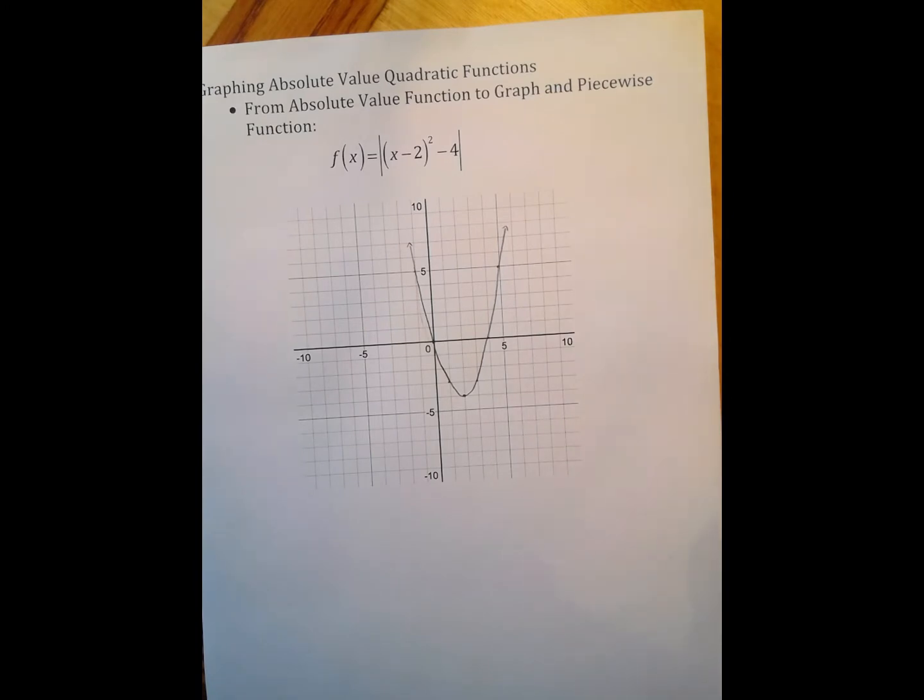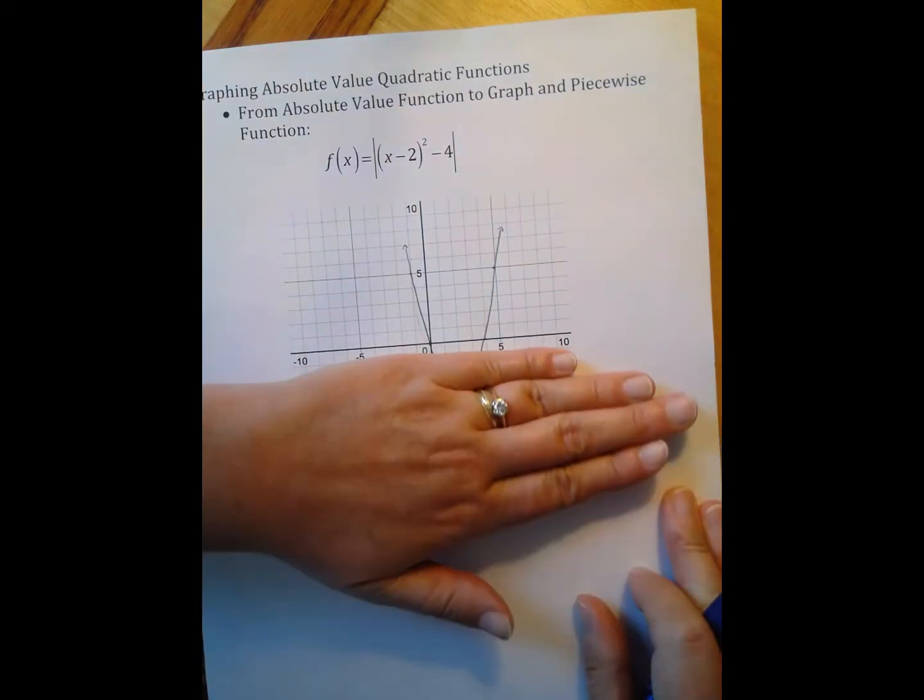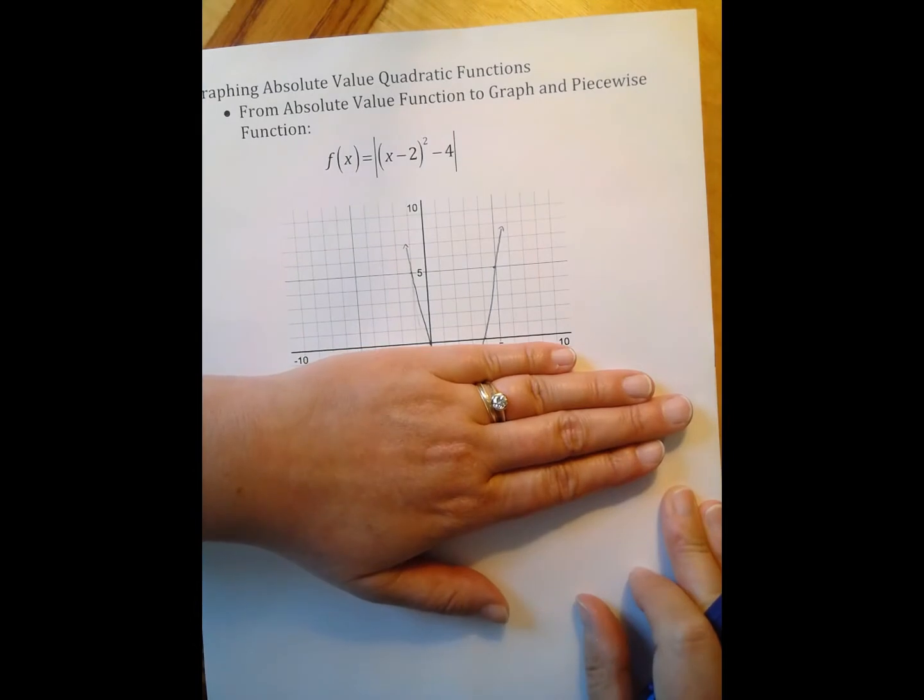So what I have to do is I have to take the portion of this graph that is negative and flip it. And so the portion that is negative, when we're talking about the negative, we're talking about the y values. So I'm looking for the portion of the graph where the y values are negative. And that's all down here. So I need to take everything that's under my hand and make it positive.